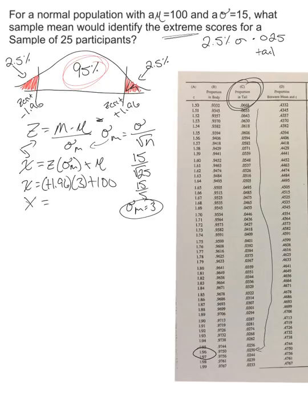So the upper end, to have an extremely high score, you need a score above 105.88. Right over here is 105.88. That would be an extremely high score.